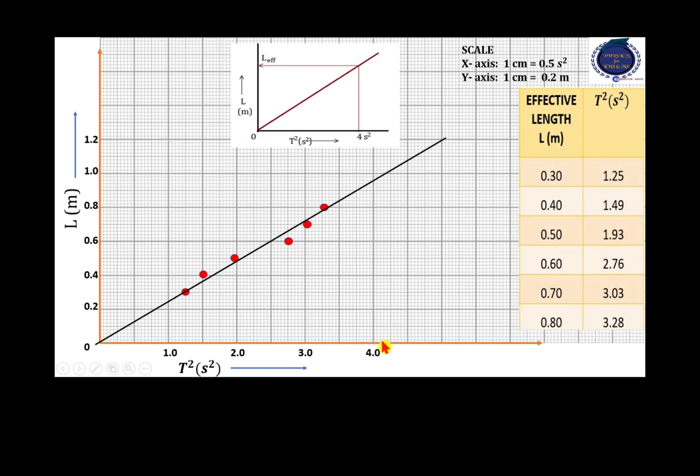Now, to find out the answer, we are going to draw a perpendicular to the graph from the x-axis from point 4.0. From the point where it cuts the straight line, we are going to draw a perpendicular to the y-axis, which gives the answer for the effective length. It is 0.96 meter. It is much closer to the theoretical value.